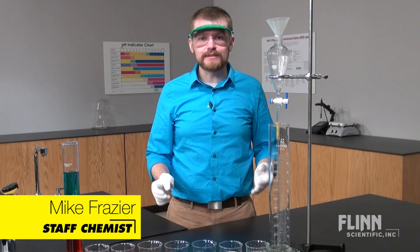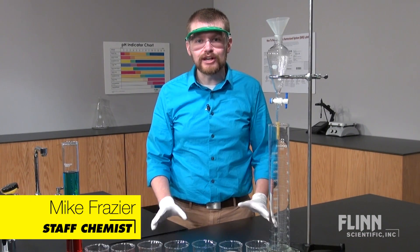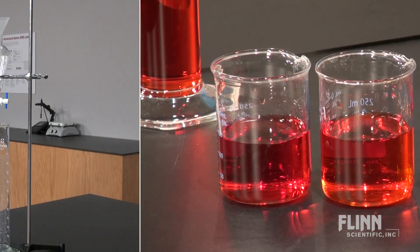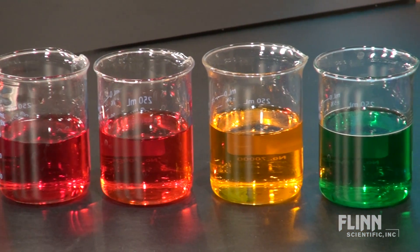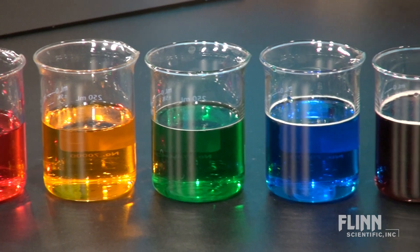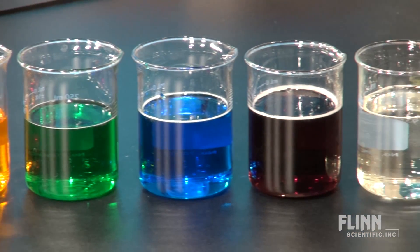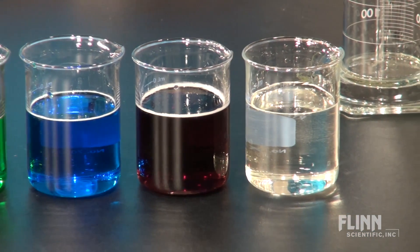To create a spectacular and colorful density column in your classroom with just sugar and water, mix seven different solutions of varying concentrations of sugar from 0% to 60%. Food dyes may be used to color the solutions.